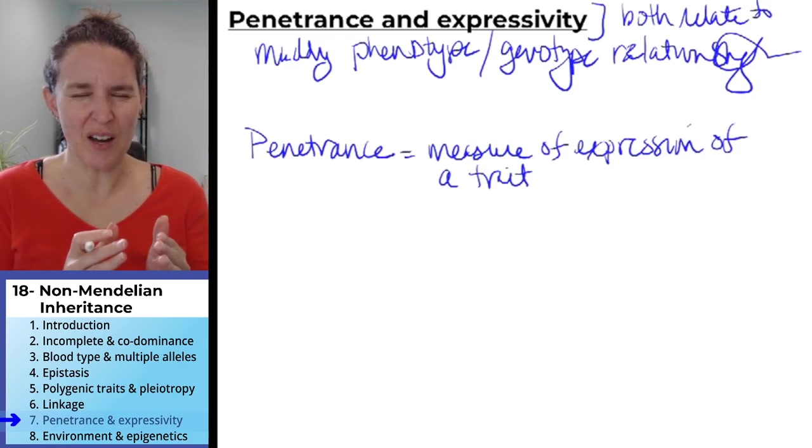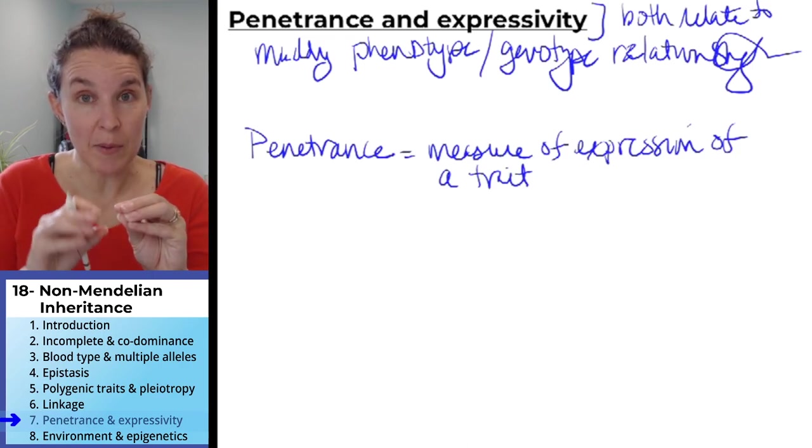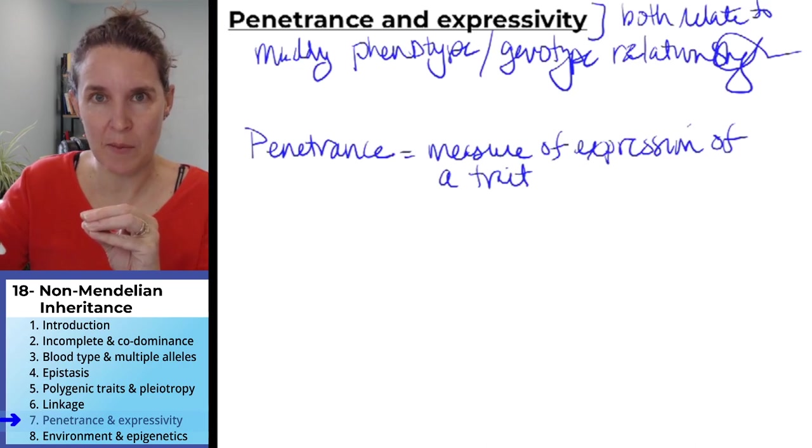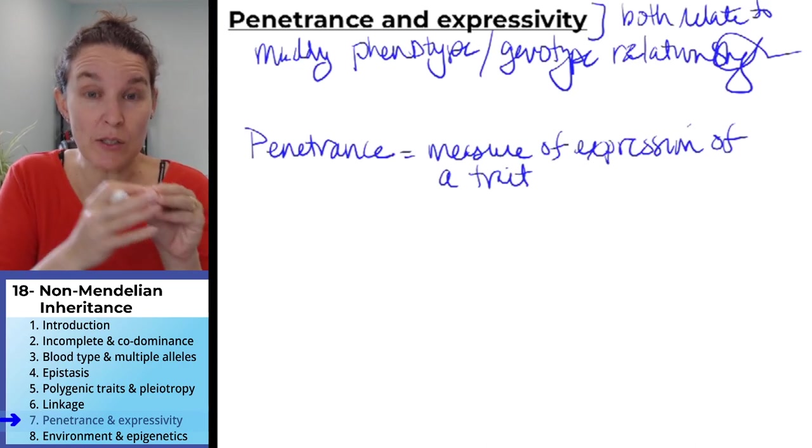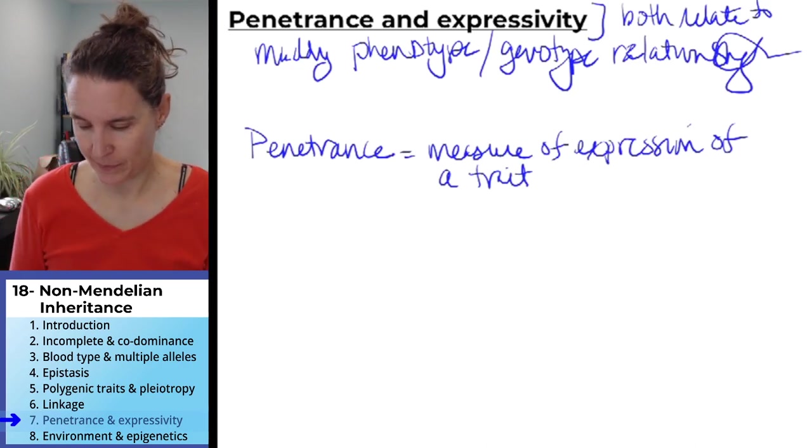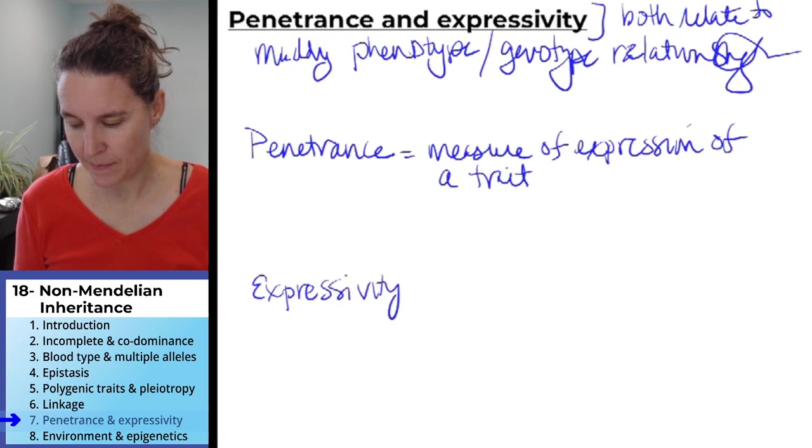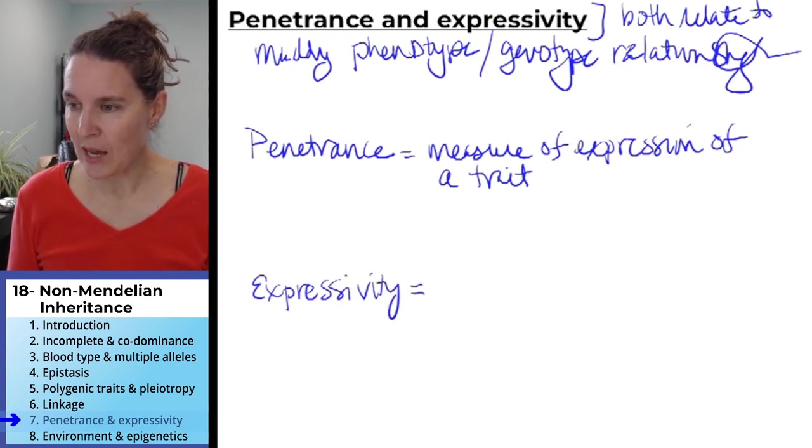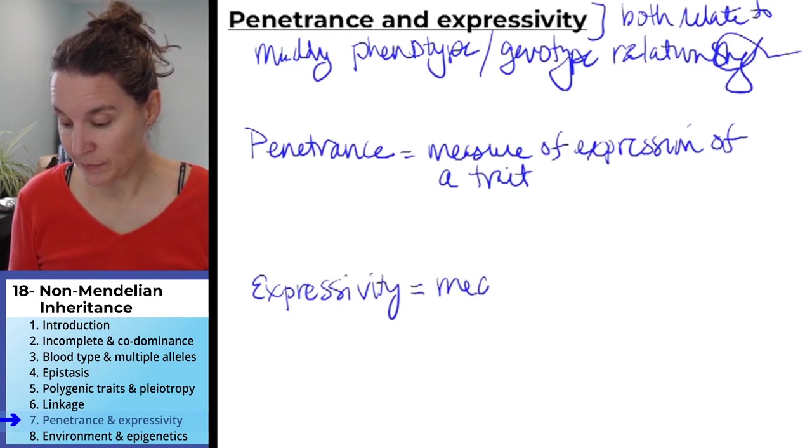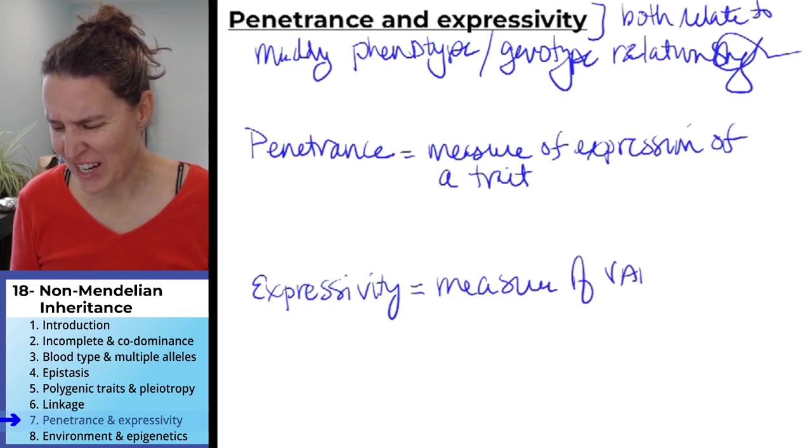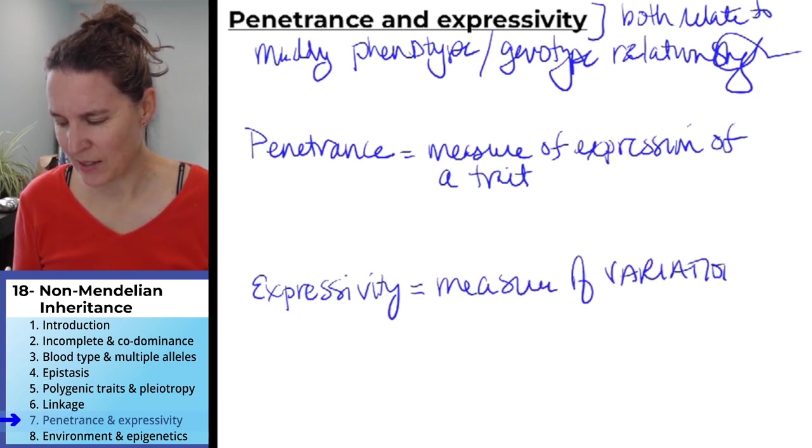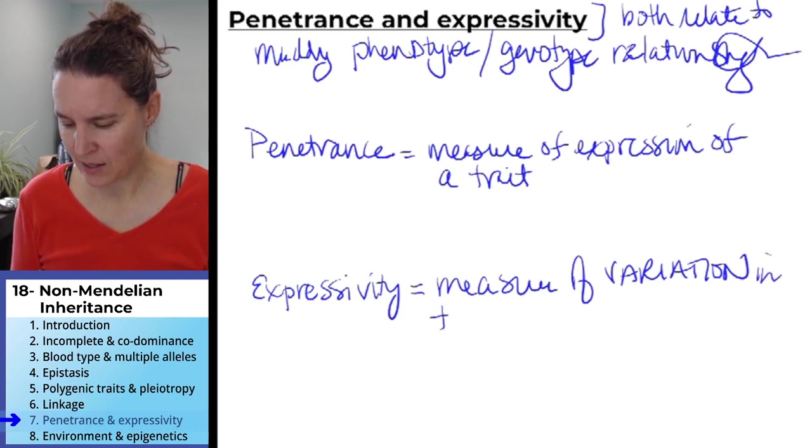So it's the measure of, here's the genotype, and this is the phenotype that is expressed as a result of this genotype. Whereas expressivity is a measure of variation in trait expression.